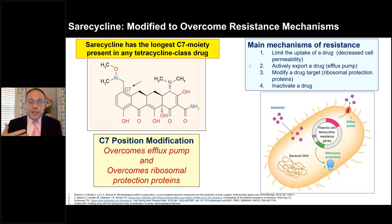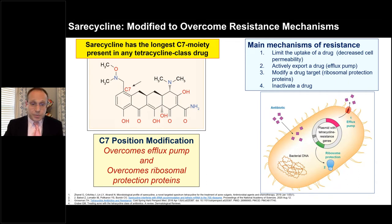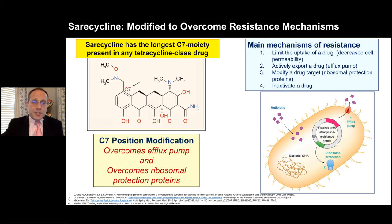Some main mechanisms of antibiotic resistance include: limited drug uptake or decreased cell permeability; active drug export via efflux pumps; modification of the drug target — which is what ribosomal protection proteins do; and drug inactivation by other means. Saracycline, with its long C7 moiety, was engineered to help overcome resistance mechanisms, particularly the efflux pump and ribosomal protection proteins.